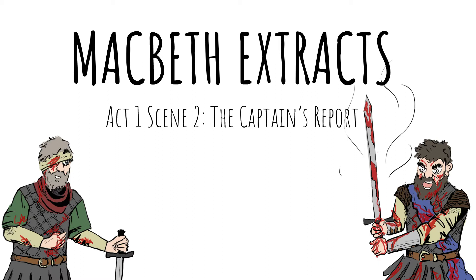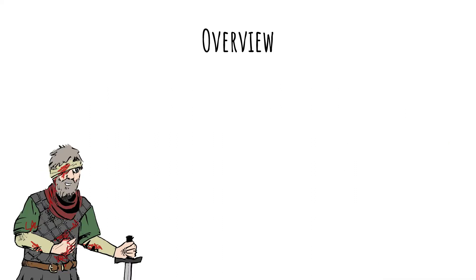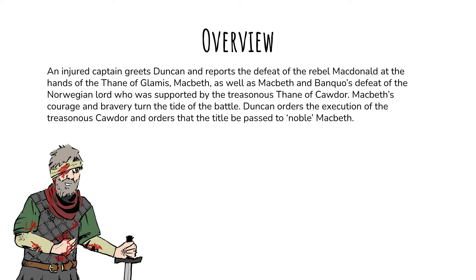The scene deals with the aftermath of the battle the witches predicted in Scene 1. Scotland is at war. Macbeth, alongside Banquo, has led King Duncan's army to victory against not only his rebellious kinsman Macdonwald, but also an invasion by King Swaino from Norway. An injured captain greets Duncan and reports the defeat of the rebel Macdonwald at the hands of the Thane of Glamis, Macbeth, as well as Macbeth and Banquo's defeat of the Norwegian lord, who is supported by the treasonous Thane of Cawdor. Macbeth's courage and bravery turn the tide of the battle. Duncan orders the execution of the treasonous Cawdor and orders the title be passed to noble Macbeth.